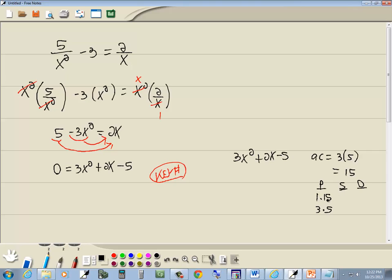The sum column, S, we add them. 1 plus 15 is 16, 3 plus 5 is 8. D for difference, we subtract smaller from larger. 15 minus 1 is 14, 5 minus 3 is 2. The number we're looking for is a number in front of our middle term, which is 2, which is right here, which means I'm going to use 3 and 5.